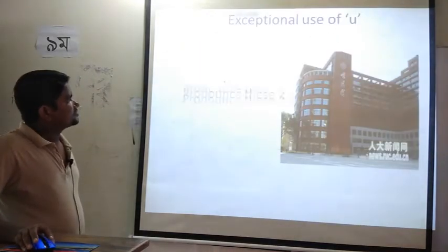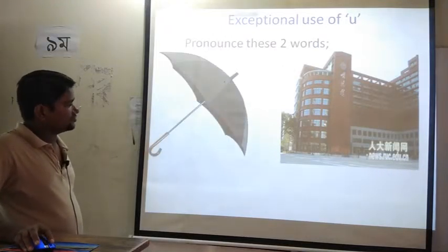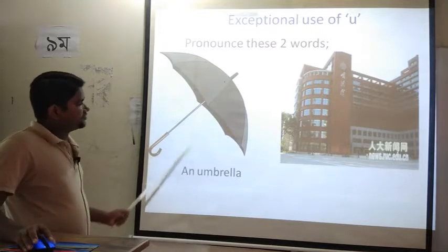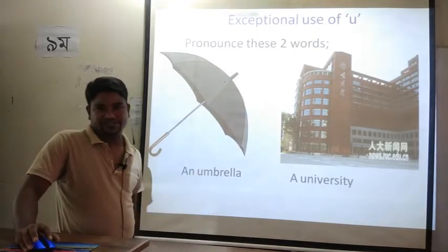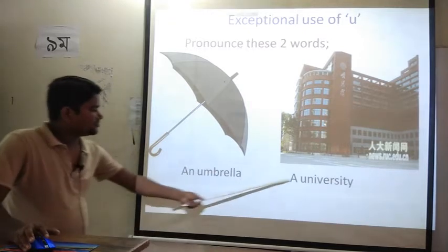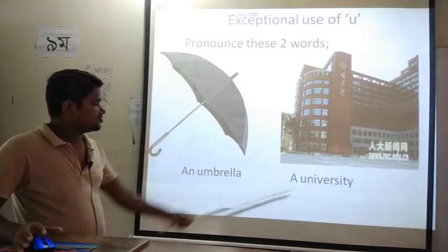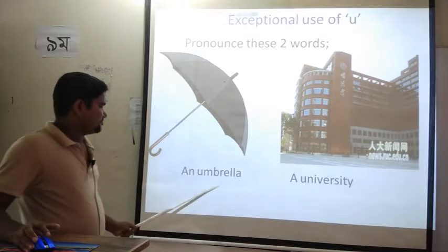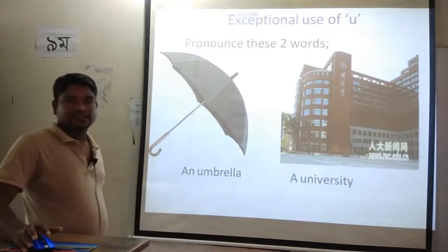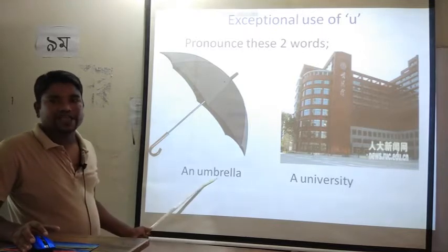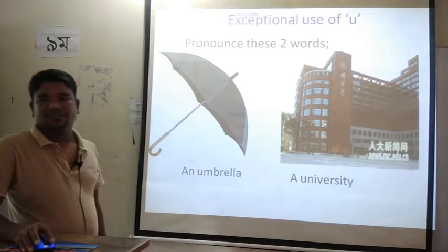My dear students, this is an example of exceptional use of U. This is the picture of an umbrella, but this is a university. If U is pronounced as 'u' (as in 'up'), it takes AN. But if U is pronounced as 'yu' (as in 'university'), it takes A. So: a university, but an umbrella.